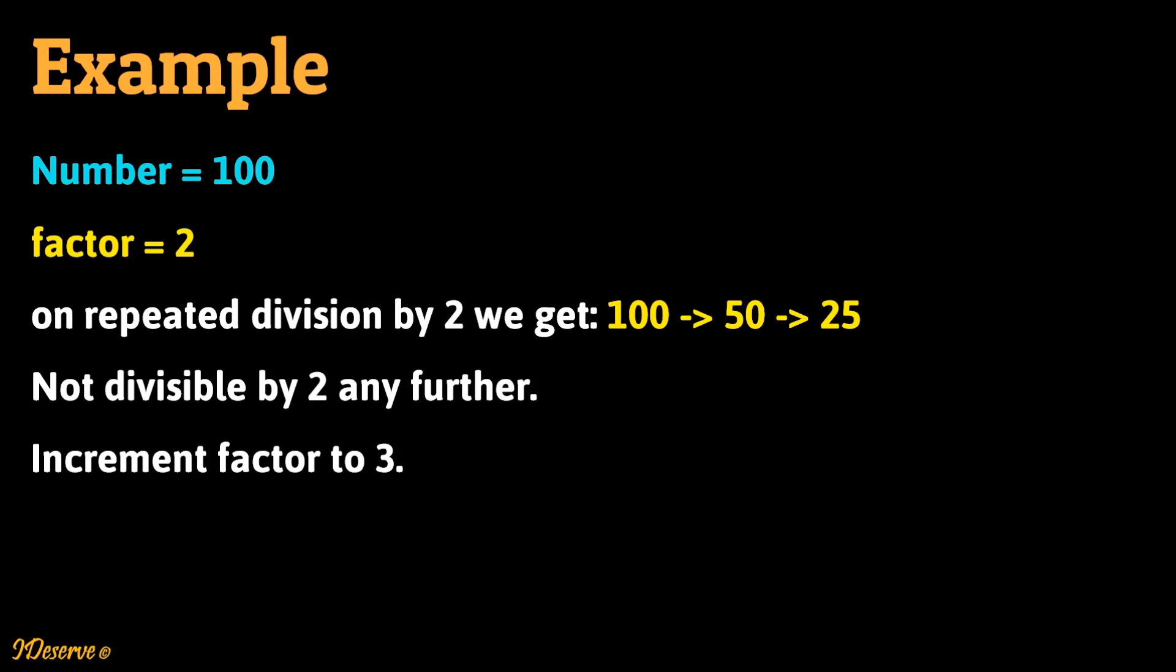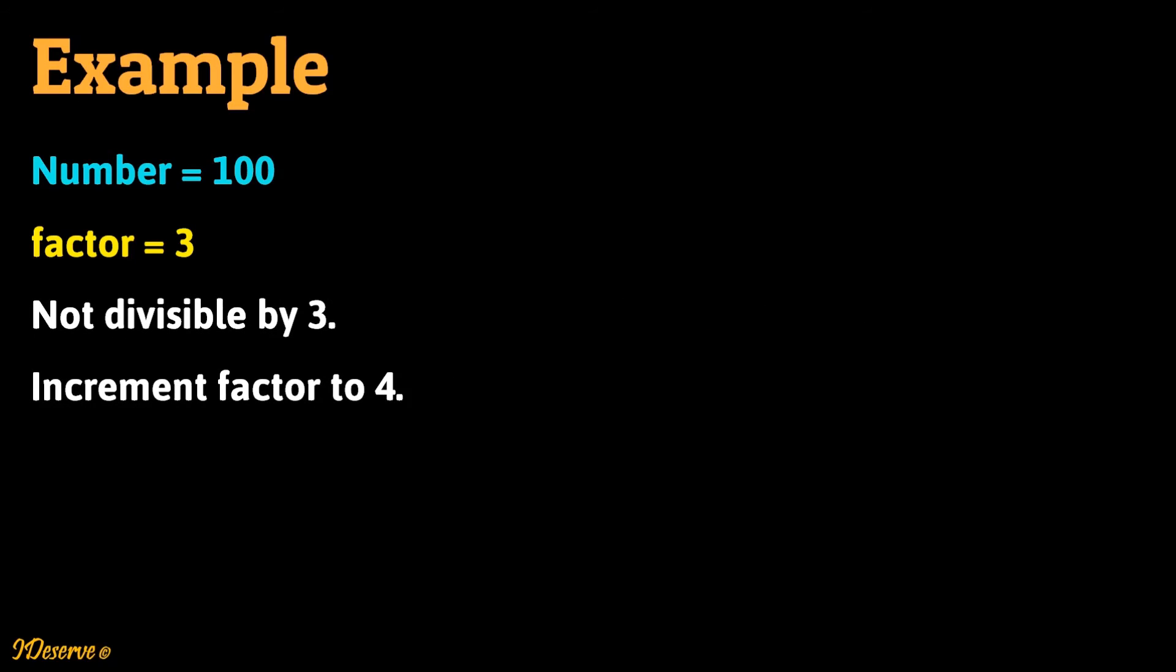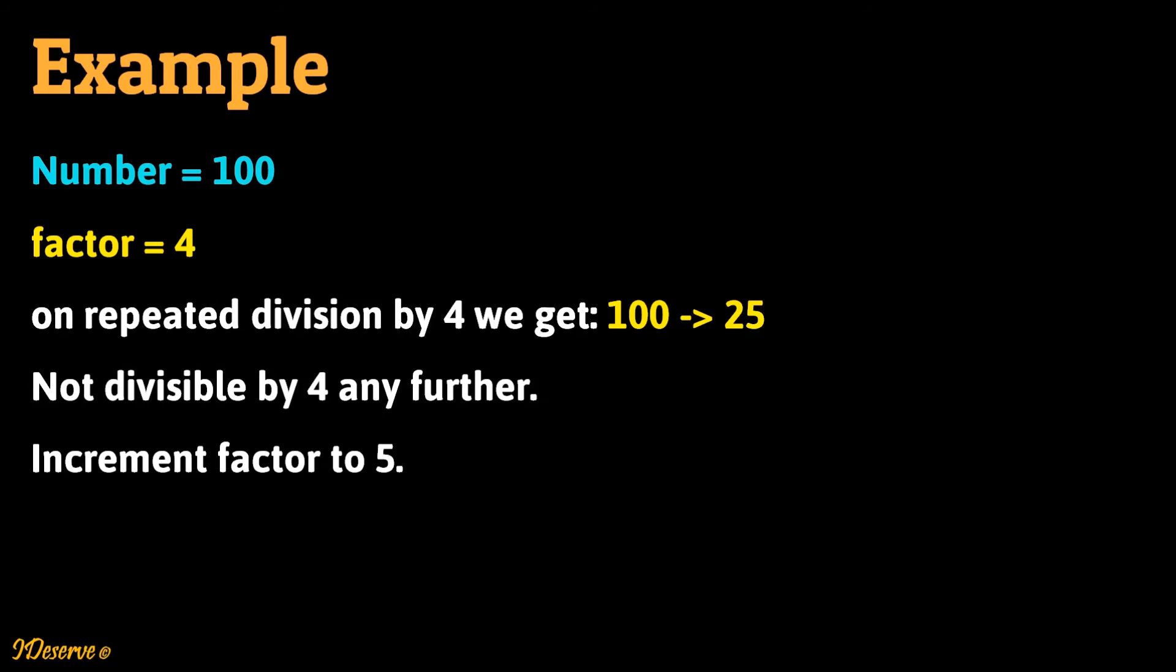Let's move on to next iteration of the algorithm. Now the factor is 3. Since number is not divisible by 3, we increment factor to 4 and move on to next iteration. Now factor is 4. On repeated division by 4, the number first gets reduced to 25 and then further. Since the number is not divisible by factor anymore and the number is not reduced to 1, we move on to next iteration.